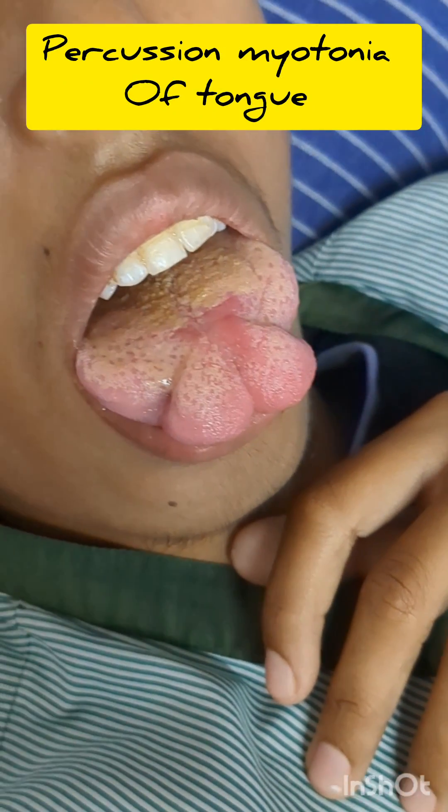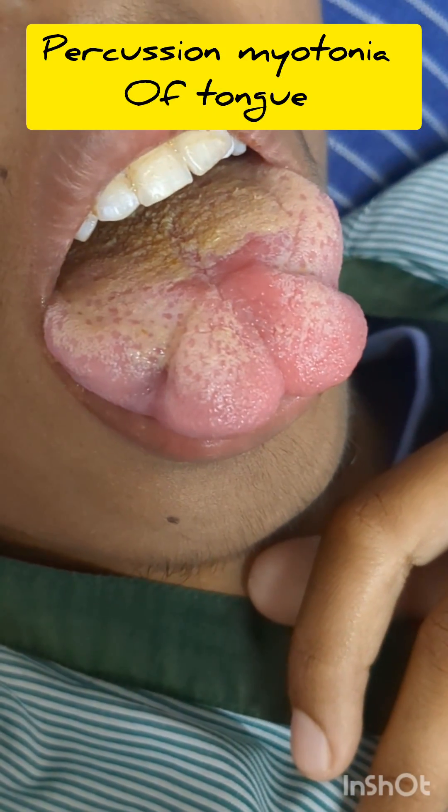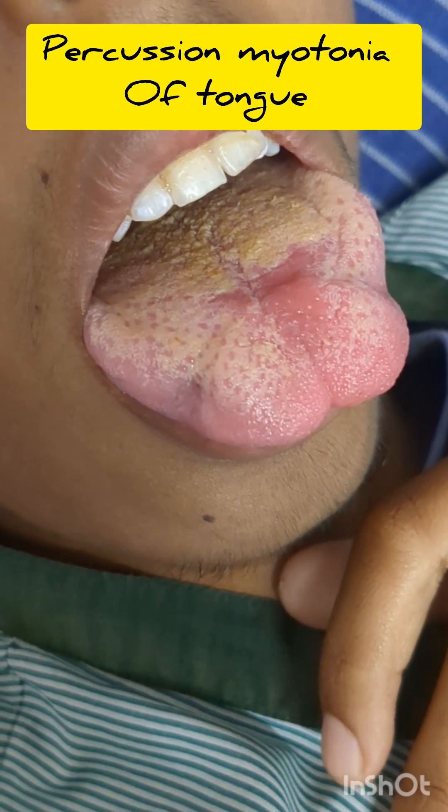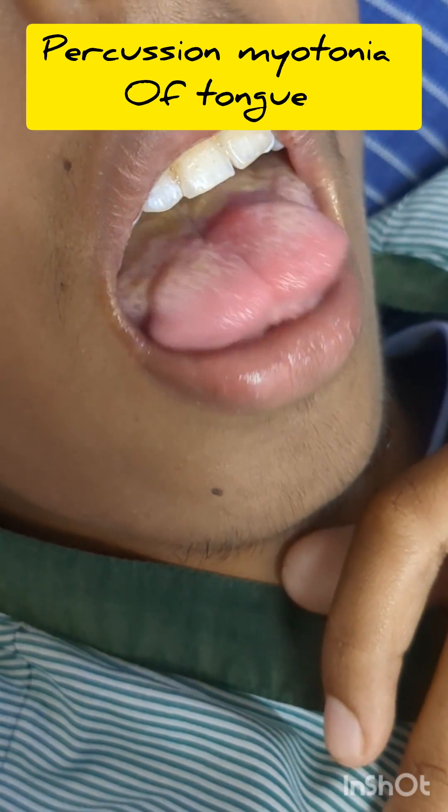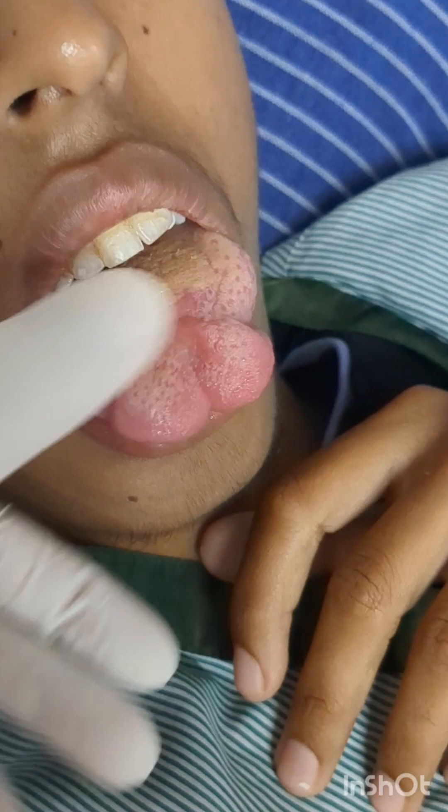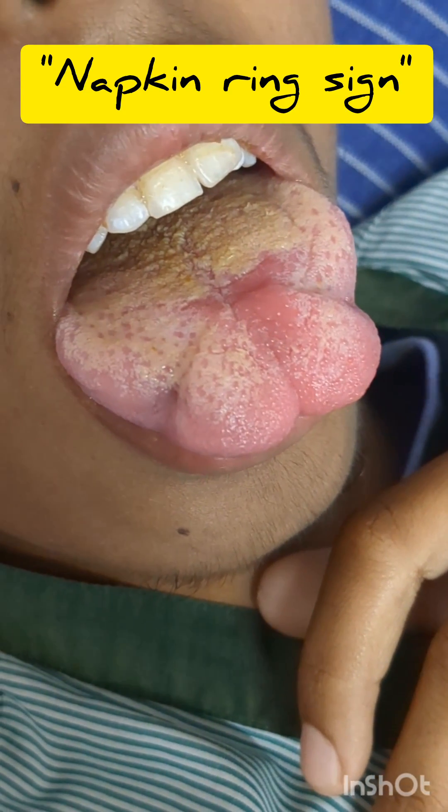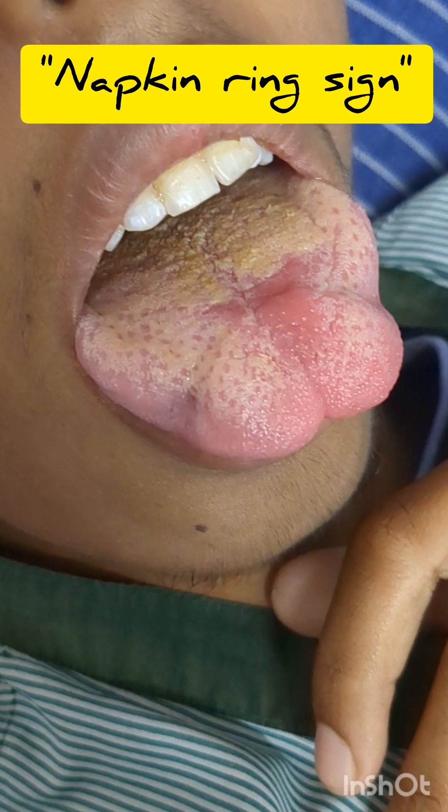Percussion myotonia of the tongue is a very interesting and peculiar finding seen in patients with myotonic disorders. When you percuss the tongue, you can see that it forms a peculiar shape due to contraction of the tongue muscles, which then resolves on its own very gradually. This is called the napkin ring sign.